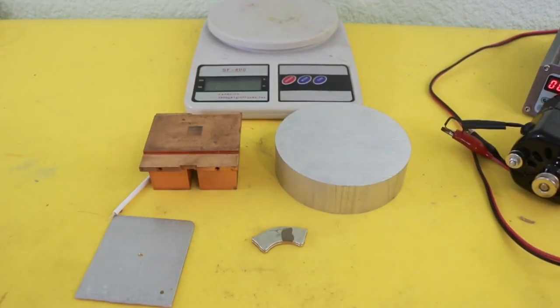Lenz's law says that the direction of the electric current induced in a conductor by a changing magnetic field is such that the magnetic field created by the induced current opposes changes in the initial magnetic field.